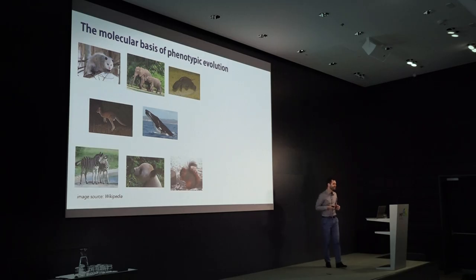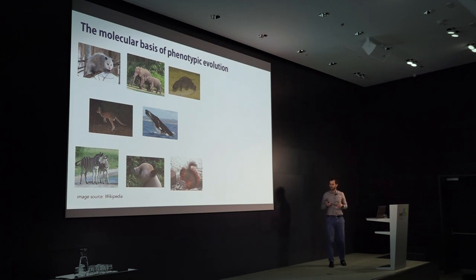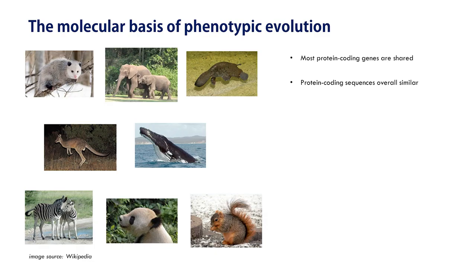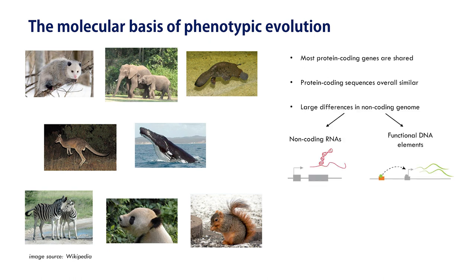These are all mammals. However, they're very different both in terms of morphology and behavior. What is surprising is that if we look into their genomes, we see that they share a very large fraction of their protein coding genes, and also that the sequences of these genes are overall very similar between species. Where these species do differ a lot is in the remaining 98% of their genome that does not encode for proteins.